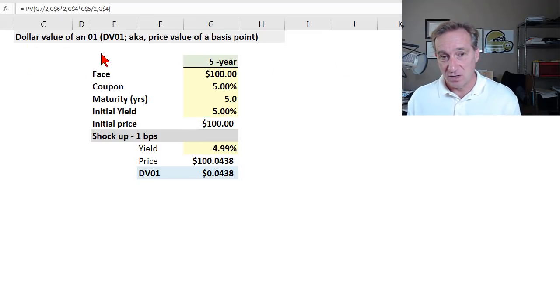To illustrate the dollar value of 01, aka price value of a basis point, I have a super simple example of a five-year bond, face value of $100. The coupon is a semi-annual pay coupon with a coupon rate of 5% per annum, five-year maturity, and the initial yield I selected as 5% per annum so that I match the coupon. If the coupon matches the yield, as you probably know, the bond must price to par.